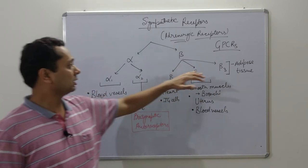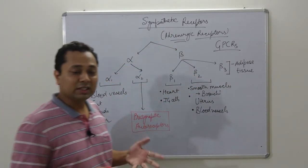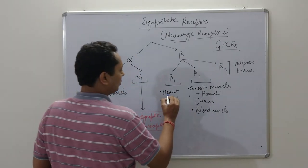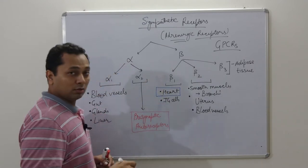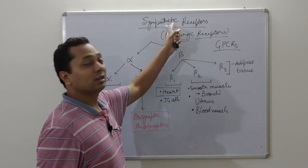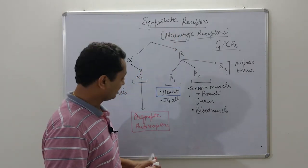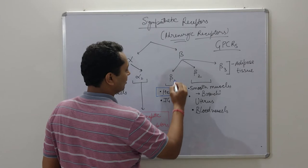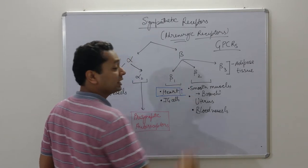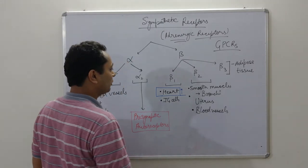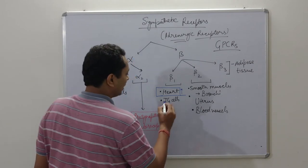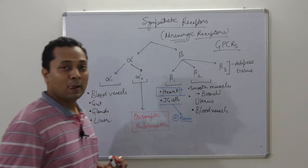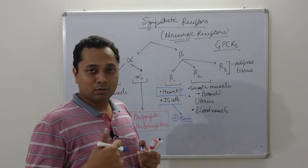Let's summarize the actions, starting with beta receptors. Beta-1 receptors are present on the heart. Whenever our body is under sympathetic influence — meaning under stress — the heart needs to pump more blood. Beta-1 receptors will therefore increase the rate and force of contraction in the heart, along with increasing the conduction velocity.